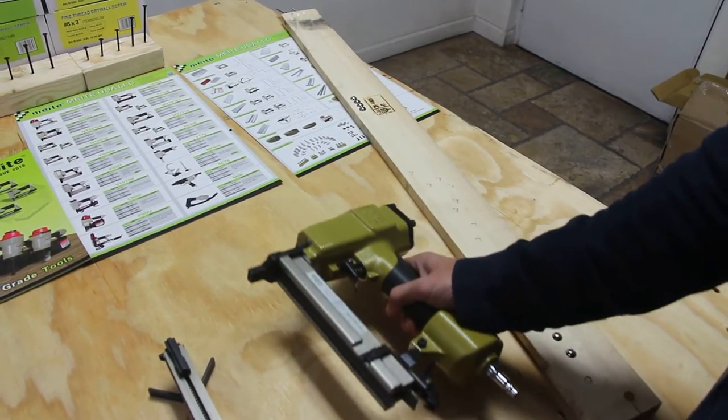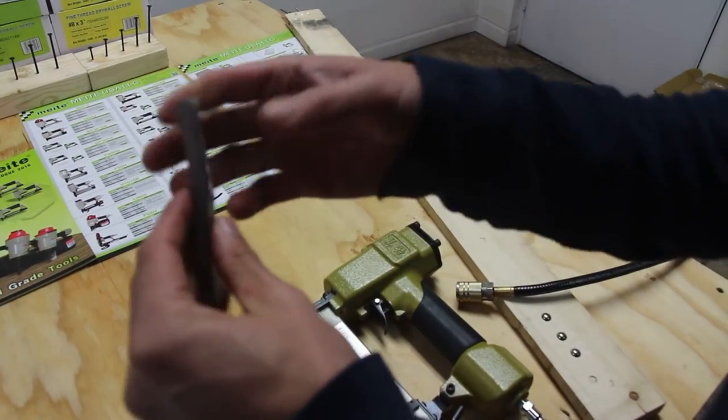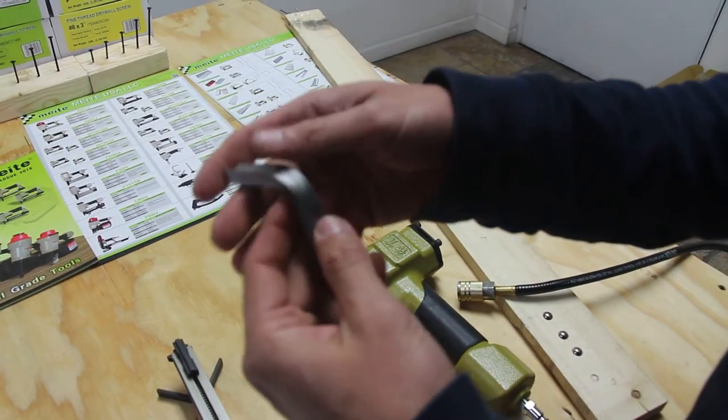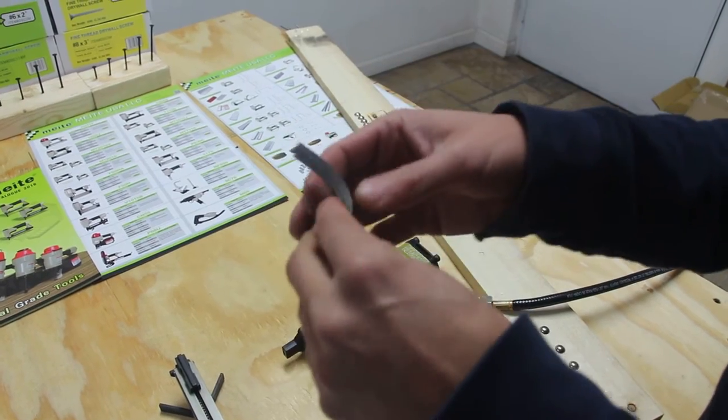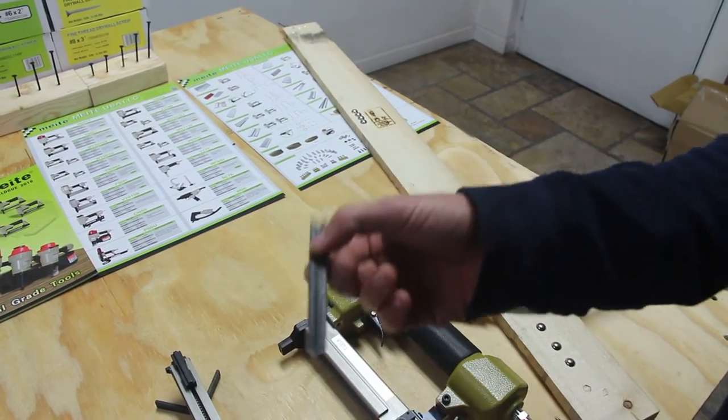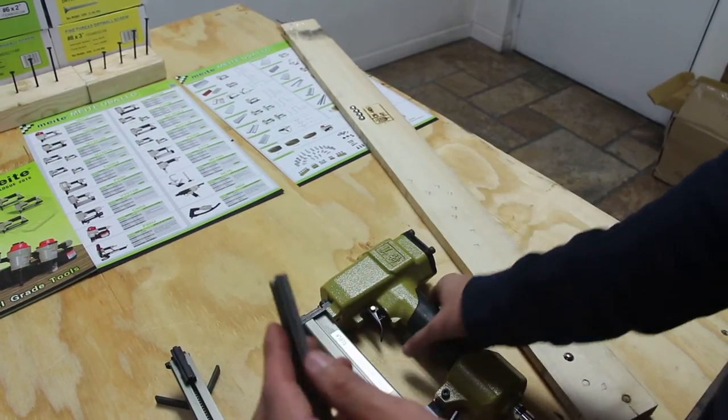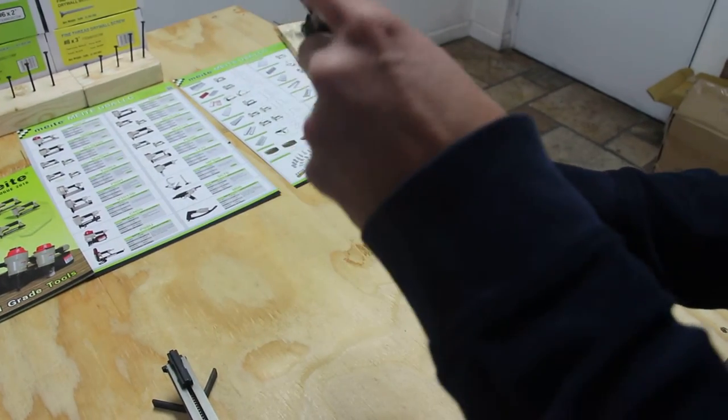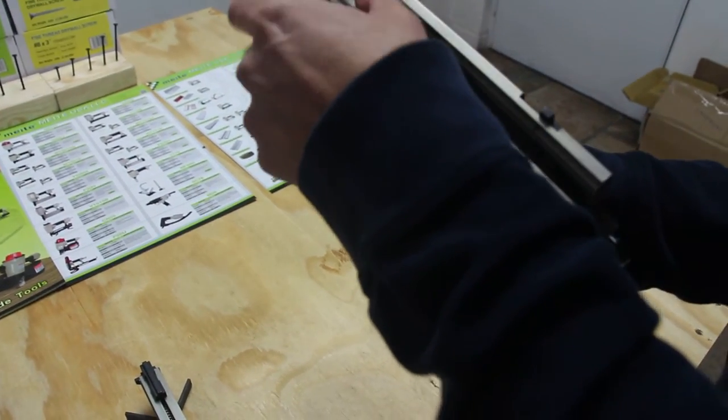Alright, now the V-nails itself, just in case you don't know which is the front and the back, the back side is going to be a lot more flimsy. You won't be able to do the same thing with the front. Alright, so I'm going to put this loaded in.